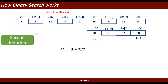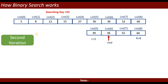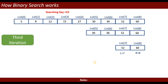In the second iteration, we calculate mid equal to left plus right divided by 2 — floor of 5 plus 8 is 13, divided by 2 gives 6.5, so mid points to index 6. The element at index 6 is 36. It checks: is 52 equal to 36? No. Is 52 greater than 36? Yes, that is true.